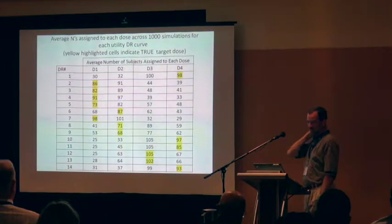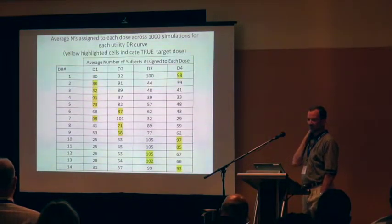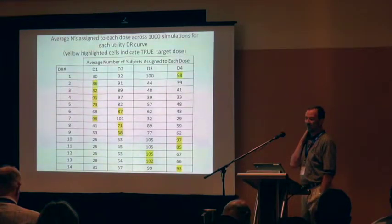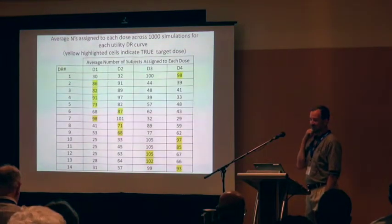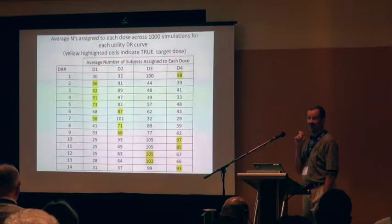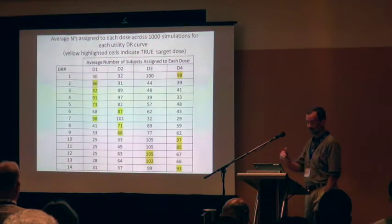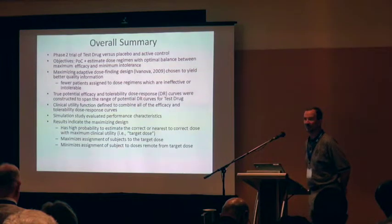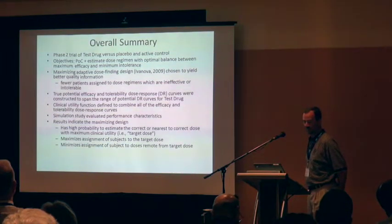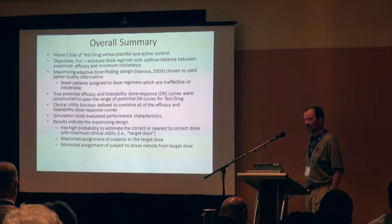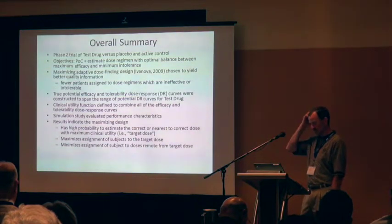These are the average sample sizes assigned to each of the doses for the scenarios. The true underlying maximum utility dose is highlighted in yellow, and those numbers are high — that's the 68 to 105 range. The overall summary: we had high probability of estimating the correct or nearly the correct dose, it maximized assignment at the target dose and minimized assignment of subjects away from the target dose.